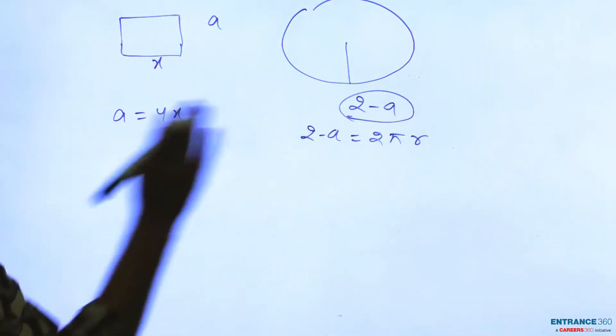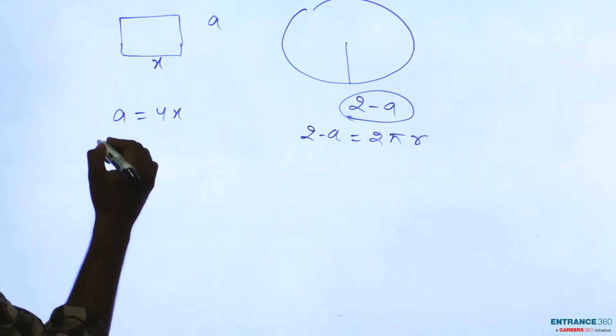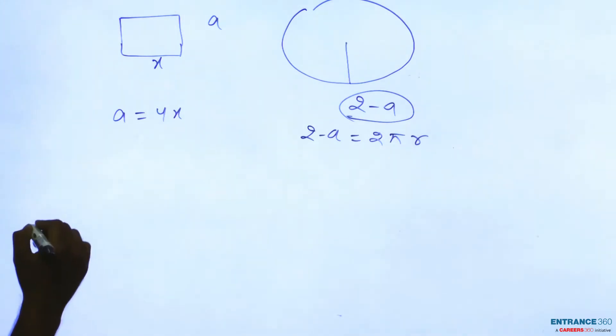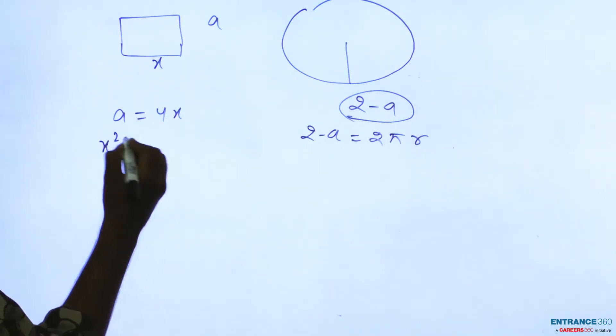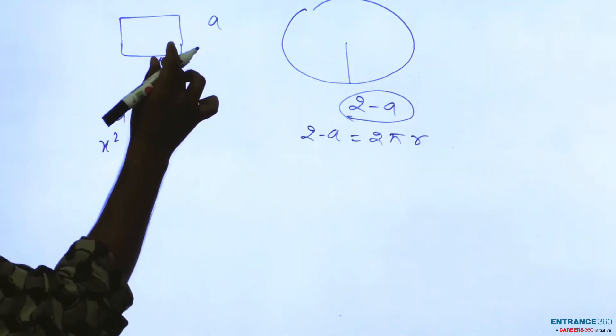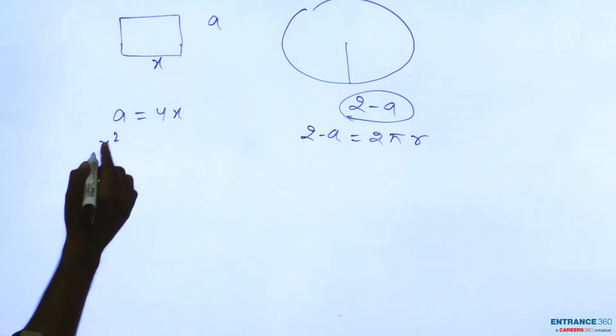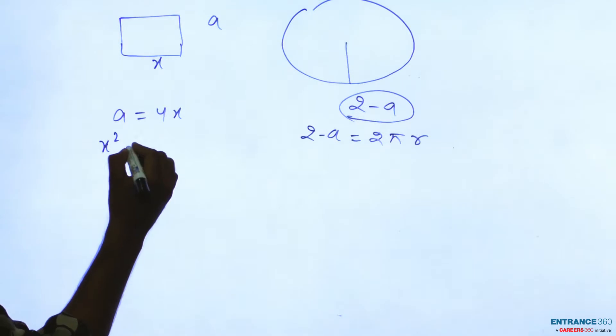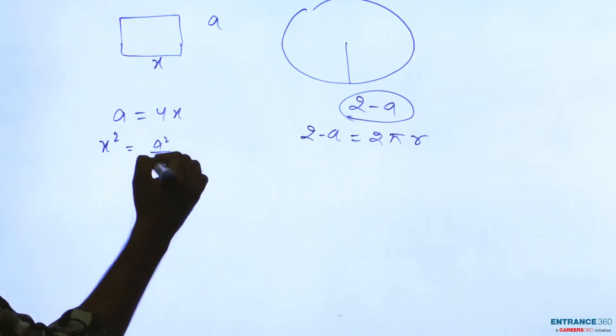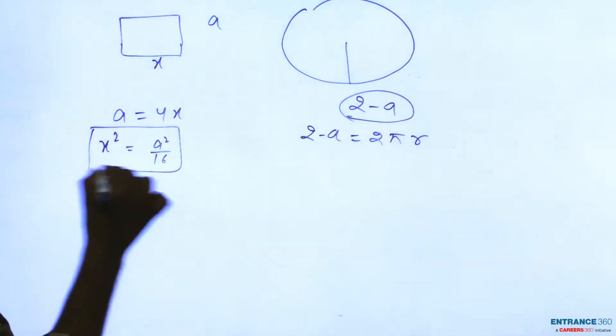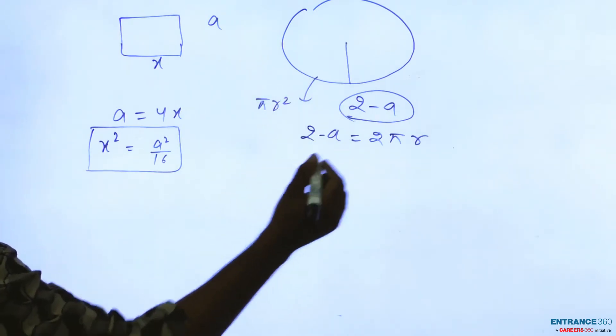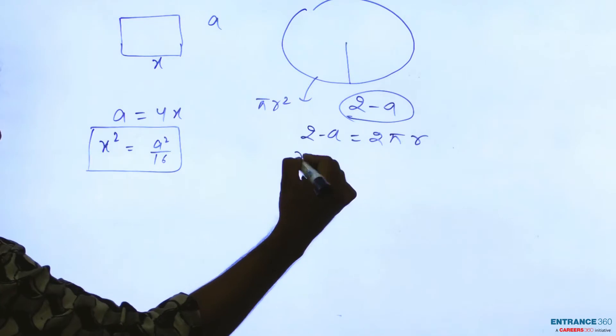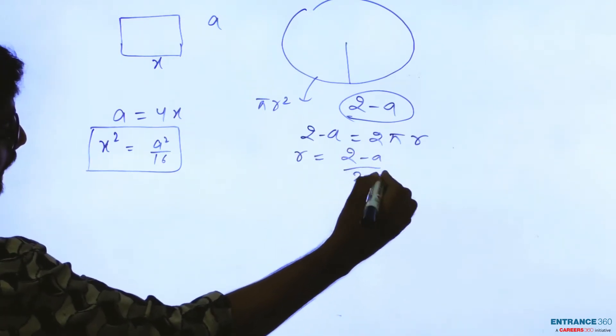Then sum of these areas, so for the square area will be x square means side square, area of the square. This will be equal to a square by 16, and for the area of the circle pi r square, and r square you can find here, r will be 2 minus a by 2 pi.